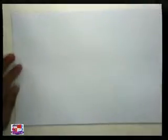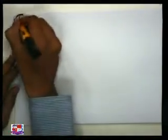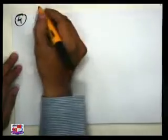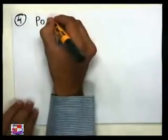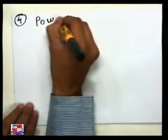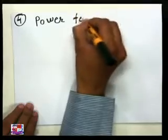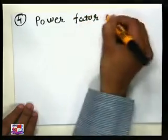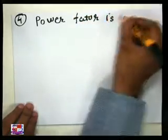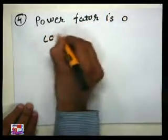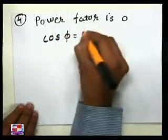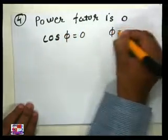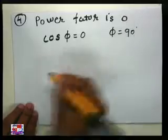Everyone must remember the third case, first case, and second case. Then what is the last case? Power factor means is like 0, so cos φ = 0, therefore φ = 90°.